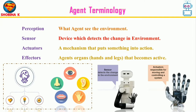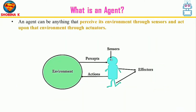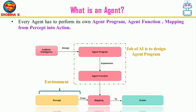In the context of AI, an agent is an independent program or entity that interacts with its environment by perceiving its surroundings via senses and acting through actuators or effectors. The agent is the solution to a problem, and it needs intelligence — which AI provides — to work in an environment. Every agent performs its own agent program, agent function, mapping from percept into action. The agent program runs on a computing device with physical sensors and actuators, which we call the architecture.